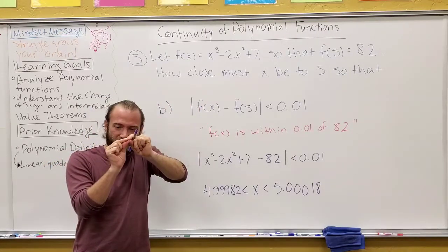And if I use a computer algebra system to solve this, it'll tell me that x must be between this value and this value. And if you notice, these are 0.0018 away from 5. So the answer here is x needs to be made within 0.0018 of 5 in order to guarantee that we've squeezed those outputs within 0.1 of 82.